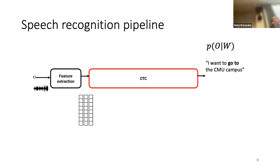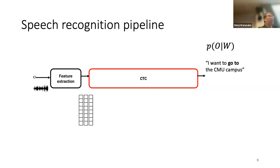We stayed in the HMM part for a while, and now we move to end-to-end ASR and one of its applications, CTC. The reason I'm placing CTC right after HMM forward-backward is that there are some similarities in how to solve CTC and HMM, especially for the training part. However, there are several differences as well.